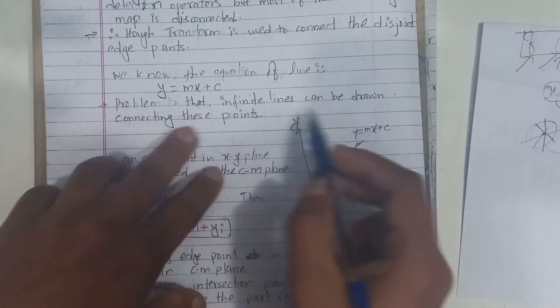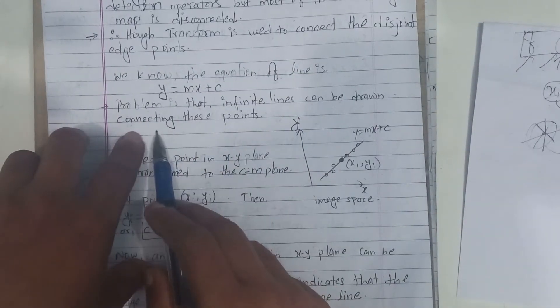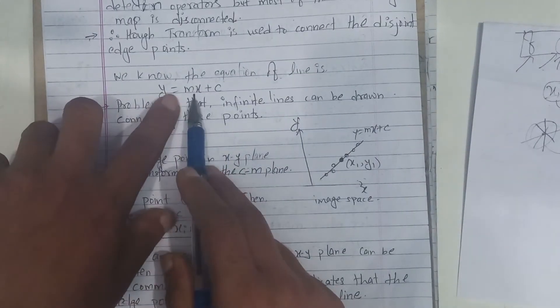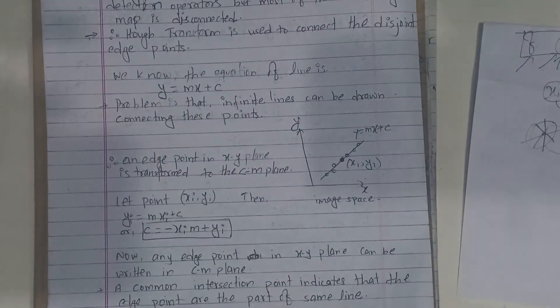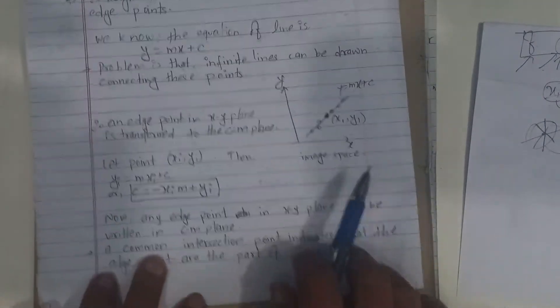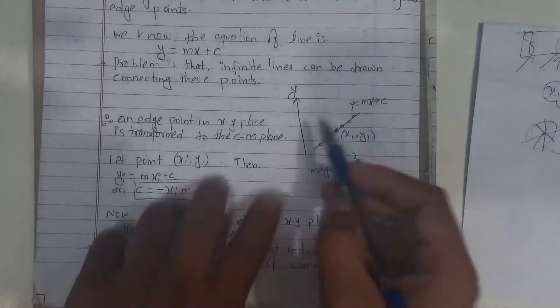The problem is that an infinite number of lines can be drawn connecting a given point, so there are infinitely many lines. Using the m-c parameter space resolves this.